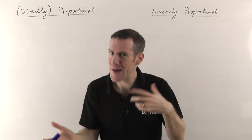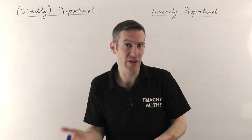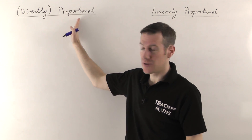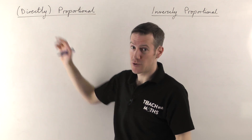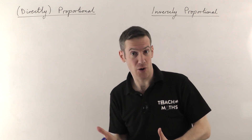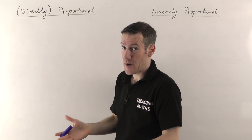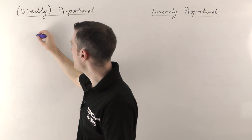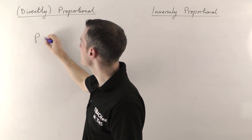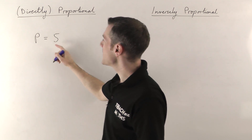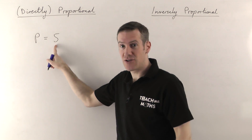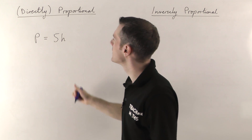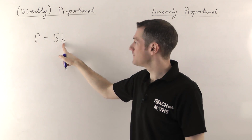Let me give you an example of each. In the first case, two things are going to be proportional, or directly proportional. Imagine you work some kind of job and you're getting paid five pounds per hour. So by the end of the day your total pay — we'll call that P — is going to be five pounds per hour times the number of hours you work, which we'll call h.